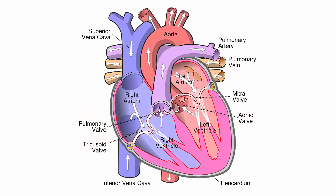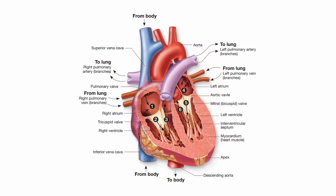Every time the heart muscle contracts to pump blood, you can feel a heartbeat. It takes less than a minute to pump blood to every part of your body, and the heart does this all the time and never stops. The heart has two sides. The left side pumps blood that contains oxygen all around the body. The right side pumps blood without oxygen to the lungs only. The drawing shows the flow of blood in the heart. When you look at the drawing, remember that the left side of the drawing shows the right side of the heart, and the right side of the drawing shows the left side of the heart.